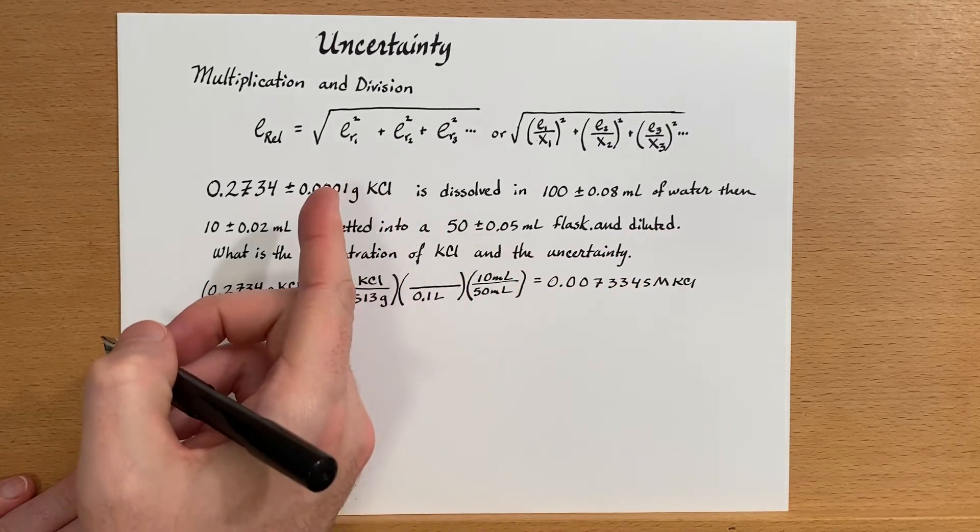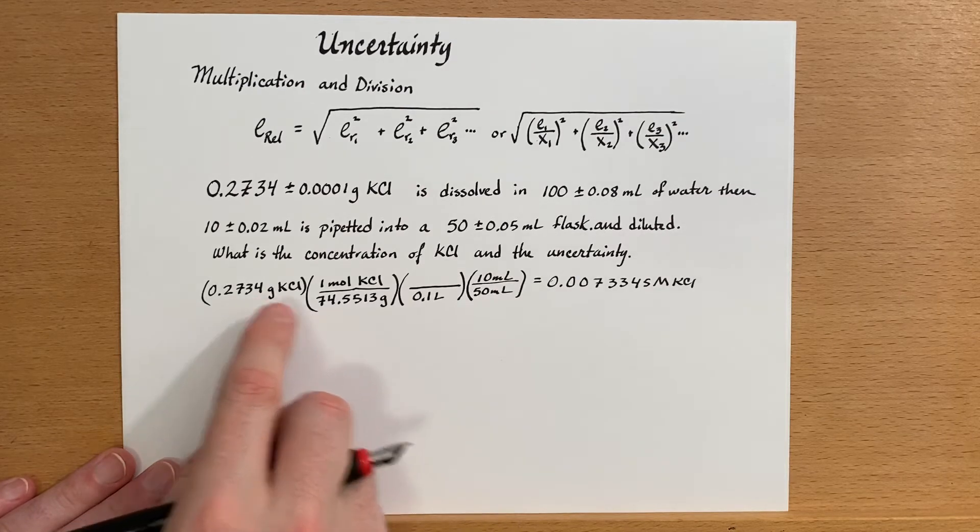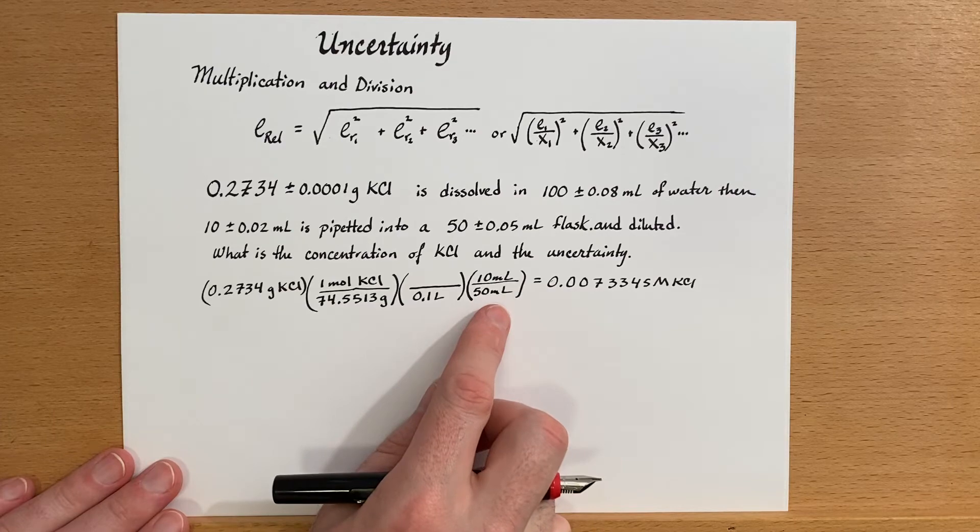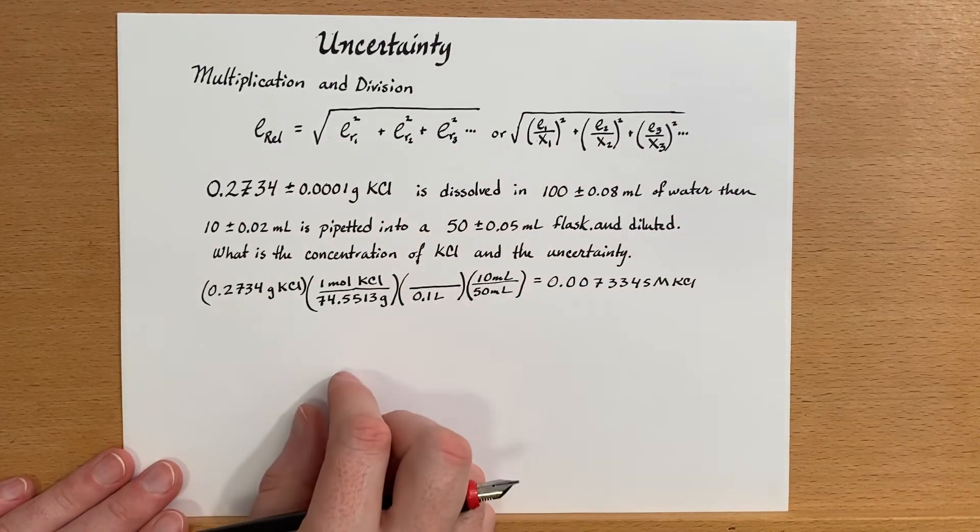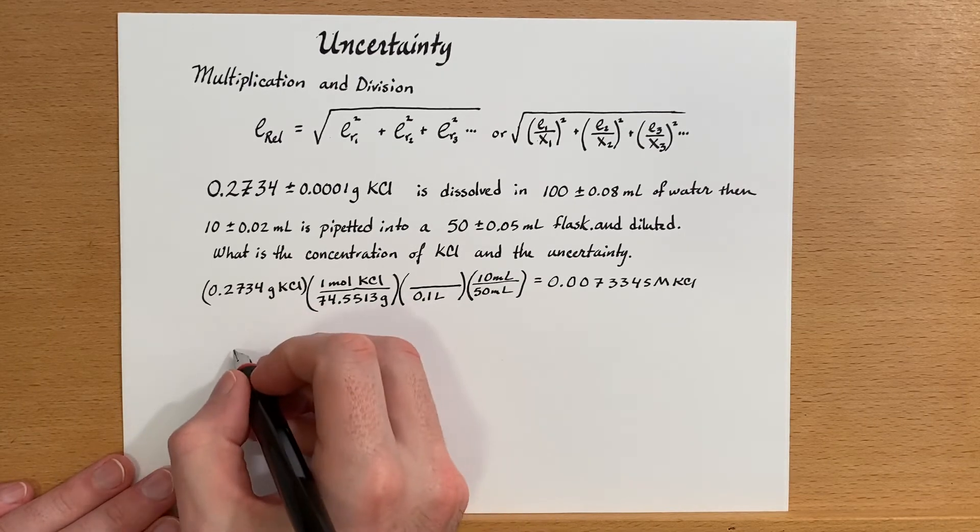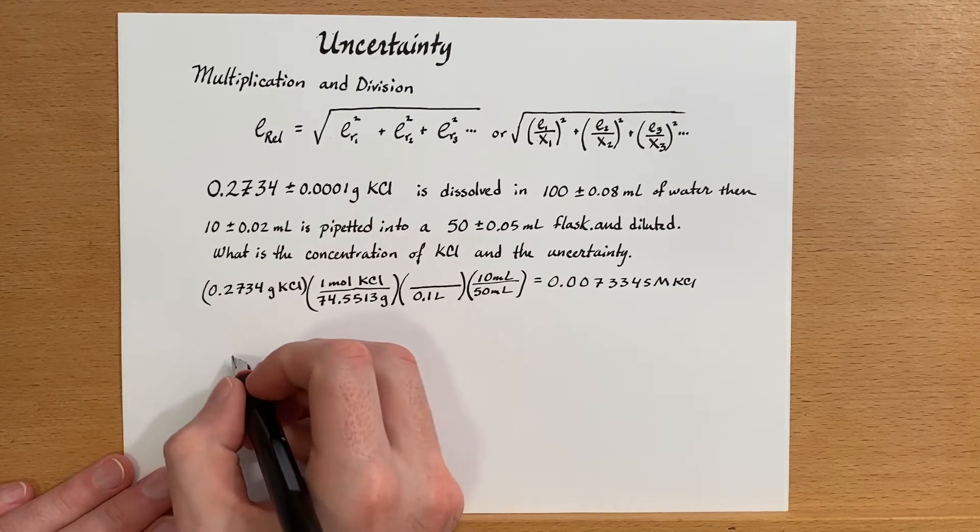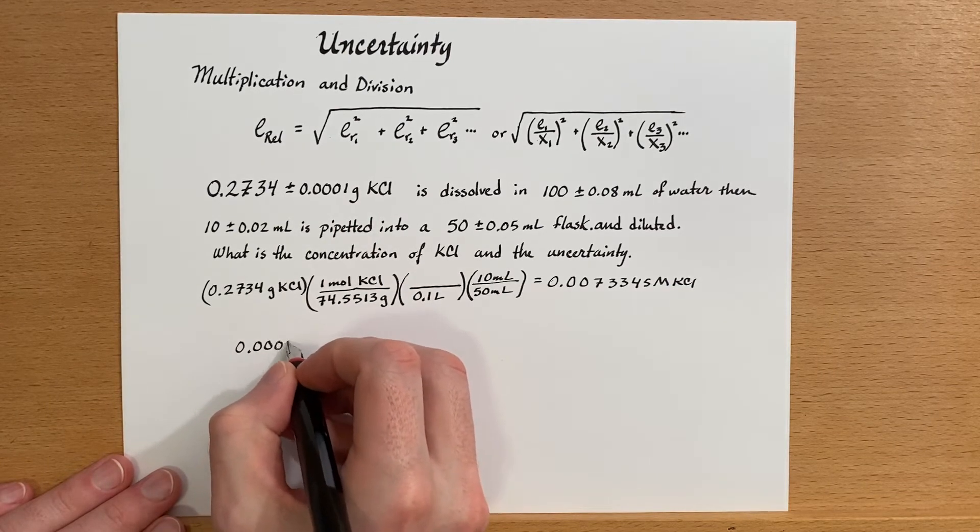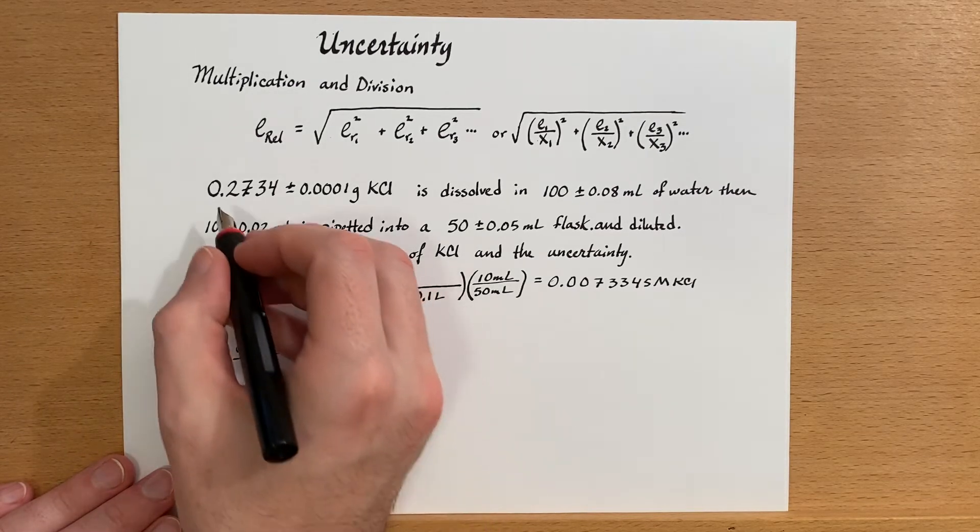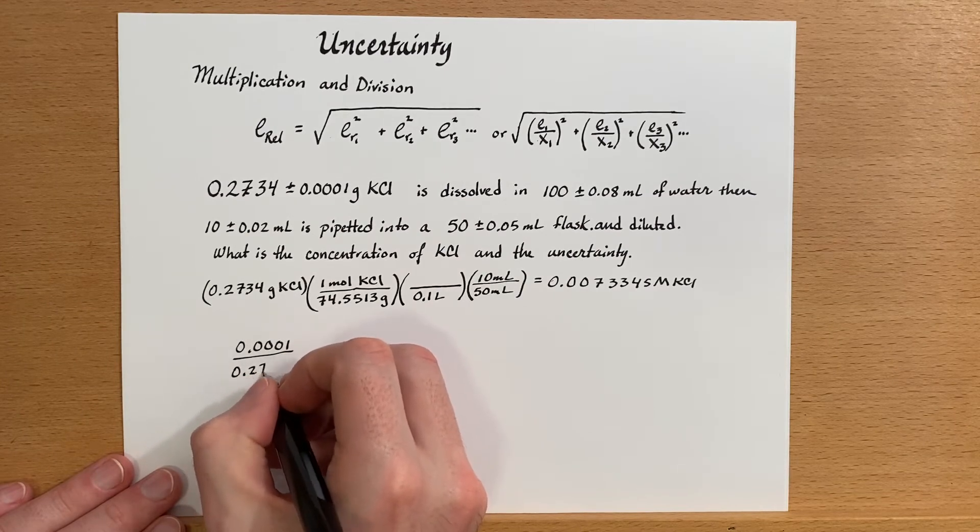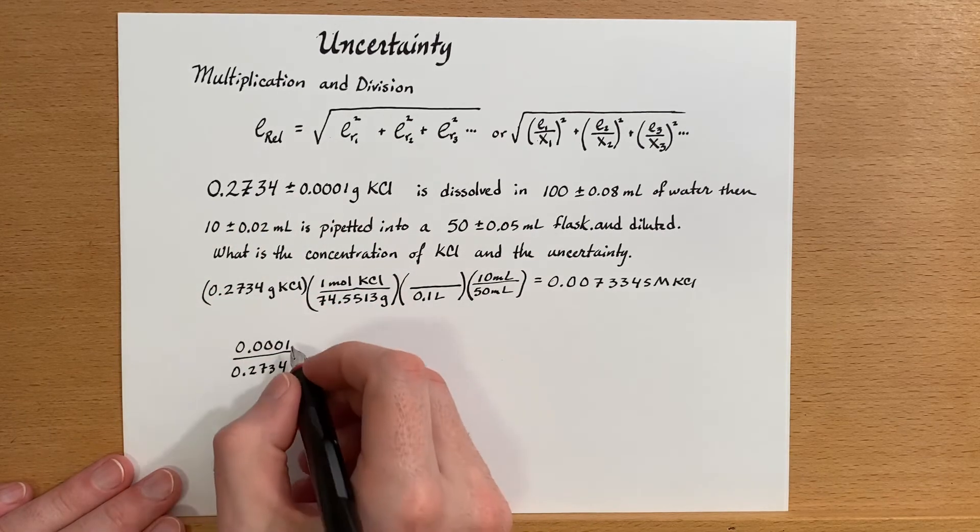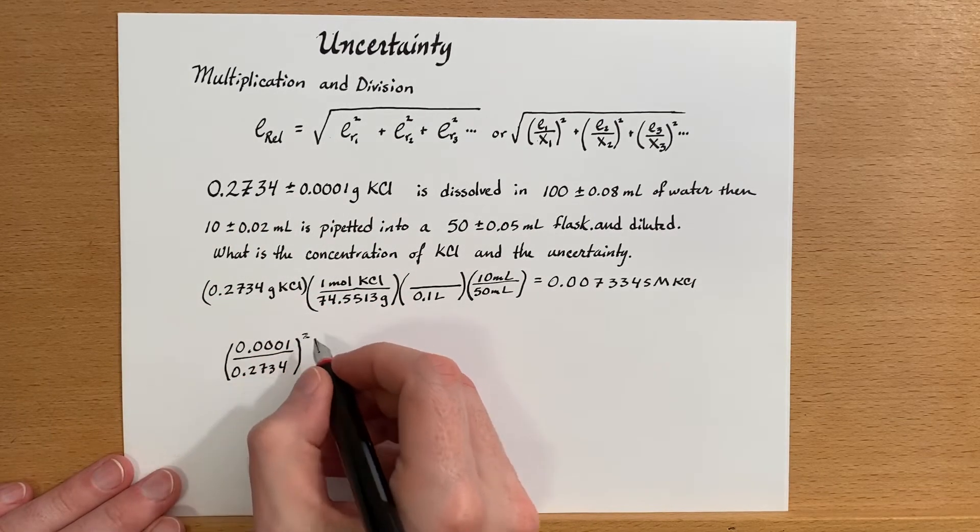We need to add up all of these errors. Now you'll notice that every one of these steps in here is multiplication or division, and so we just need to use this one formula here. We don't have any addition or subtraction events. All right, so first error. So that's 0.001, and then it's divided by 0.2734. So the error divided by the magnitude of the measurement, that's relative error. Then we'll square that, and then we're going to continue on with all of the others.